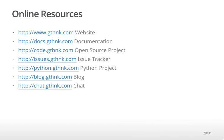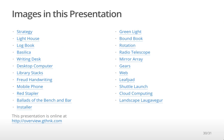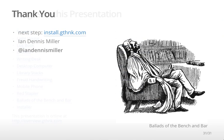The GThink project provides lots of online resources, including a website, extensive documentation, the source code as an open source project, an issue tracker for bugs and other issues, the Python project, a blog for updates, and a chat room. This presentation used lots of online images, which are all linked off of this page. Now that you know more about GThink, go to install.gthink.com to get started. Thanks for watching.